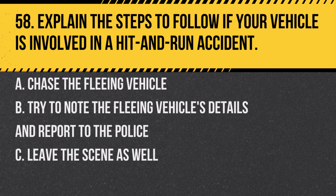Question 58. Explain the steps to follow if your vehicle is involved in a hit-and-run accident. A. Chase the fleeing vehicle. B. Try to note the fleeing vehicle's details and report to the police. C. Leave the scene as well. Answer: B. Try to note the fleeing vehicle's details and report to the police. Accurate reporting is important for investigation and insurance purposes.